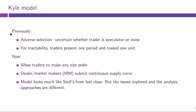Previously, in the Glosten-Milgram model we saw two classes ago, adverse selection came from the fact that the dealer or market maker was uncertain whether the trader submitting the market order is a speculator — meaning they are informed about the fundamental value of the asset — or just a noise trader who trades due to portfolio risk needs or liquidity concerns. For tractability, we assumed each trader was only present for one period and traded one unit of the asset. One justification for this one-unit assumption is that if somebody wants to trade a lot, they can split their trade into many small trades: if I want to trade 100 stocks I can submit 100 orders for a single stock, fitting the Glosten-Milgram model.